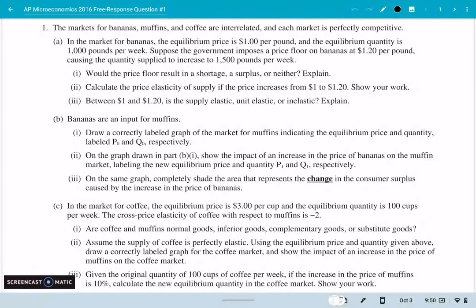So we're looking at three markets in this problem: the markets for bananas, muffins, and coffee. And they're all related to each other and the competitive market. So there's nothing funky going on there. Part A says in the market for bananas, the equilibrium price is $1 per pound and the equilibrium quantity is 1,000 pounds per week. Now suppose the government imposes a price floor at $1.20 per pound, causing the quantity supplied to increase to 1,500 pounds per week. Question asks us, would that price floor cause a shortage or a surplus or neither and explain.